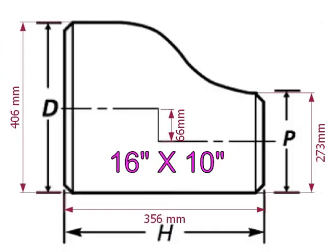An eccentric reducer is a fitting used in piping systems between two pipes of different diameters. The same fitting can be used in reverse as an eccentric increaser or expander.